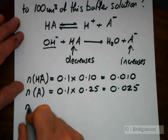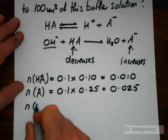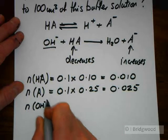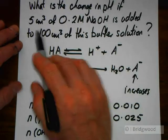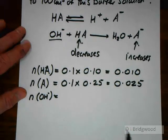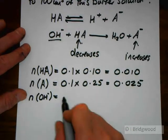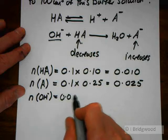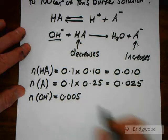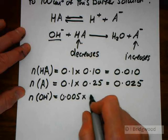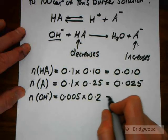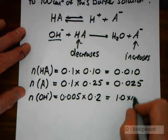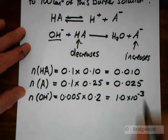The number of moles of hydroxide that we're adding, we're adding 5 cubic centimeters of 0.2 molar sodium hydroxide. So the number of moles of hydroxide ions that we've got is going to be 0.005 cubic decimeters, and our concentration 0.2. 1.0 times 10 to the minus 3.